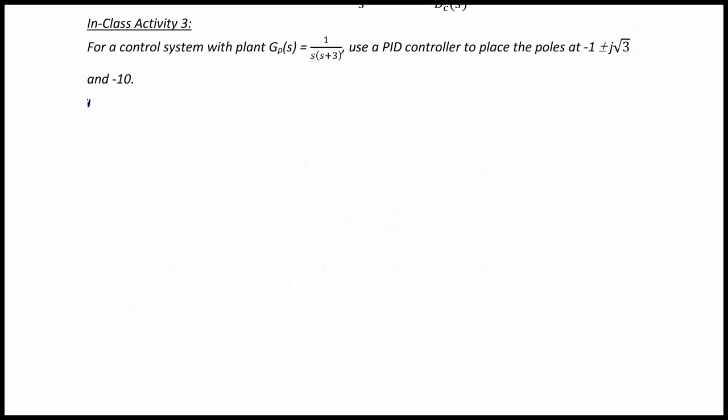So gp of s is equal to 1 over s squared plus 3s, which equals np over dp.